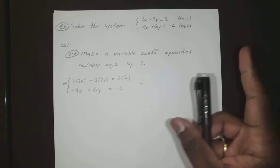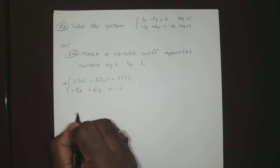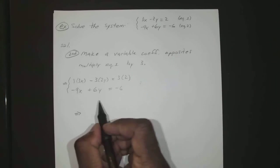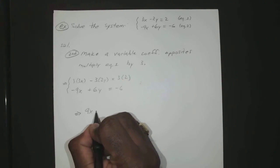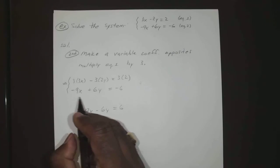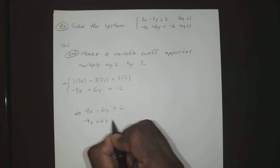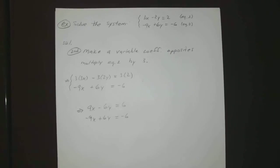So if we go ahead and simplify that, I'll put it underneath it. We have 9x - 6y = 6, and we have -9x + 6y = -6.